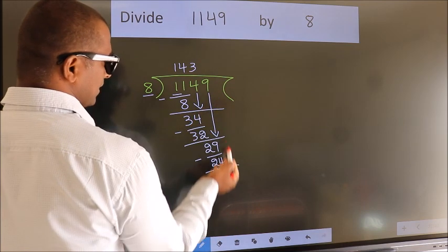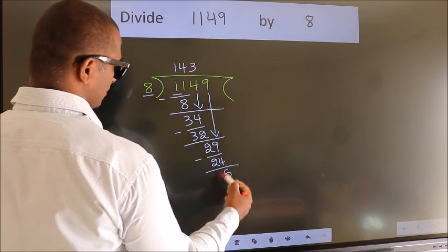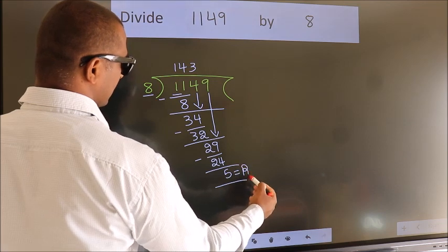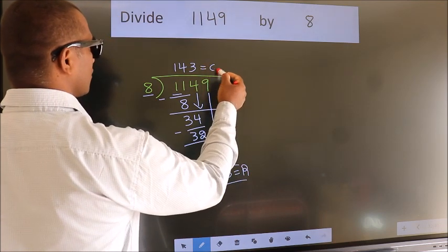No more numbers to bring it down. So, we stop here. This is our remainder. This is our quotient.